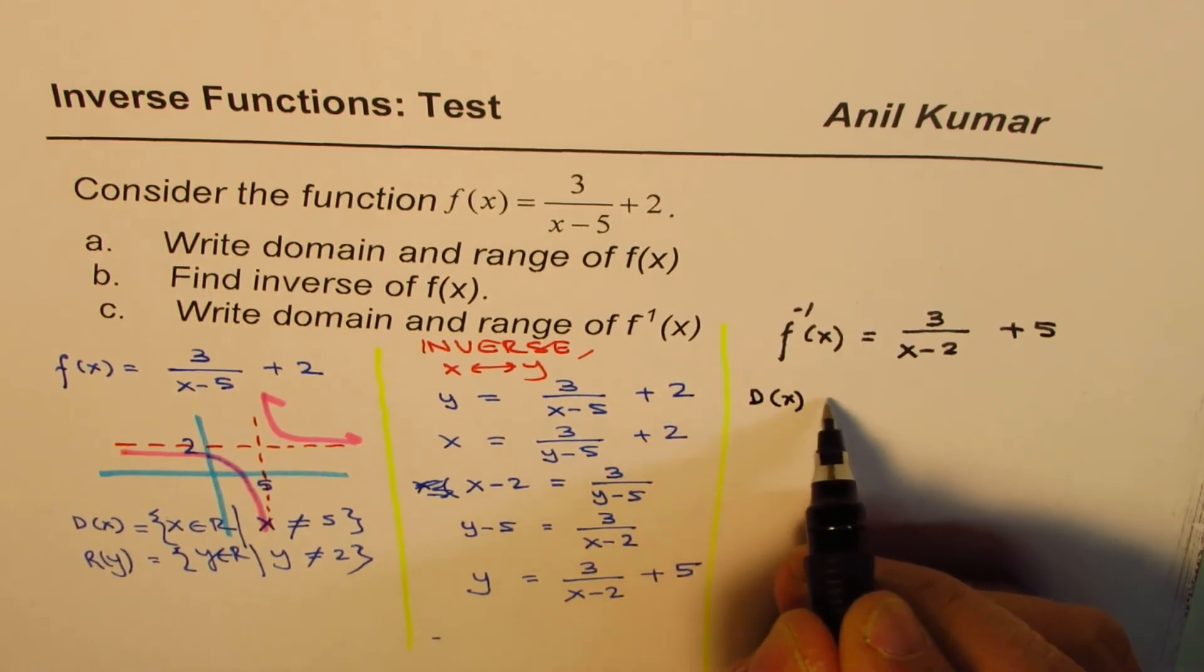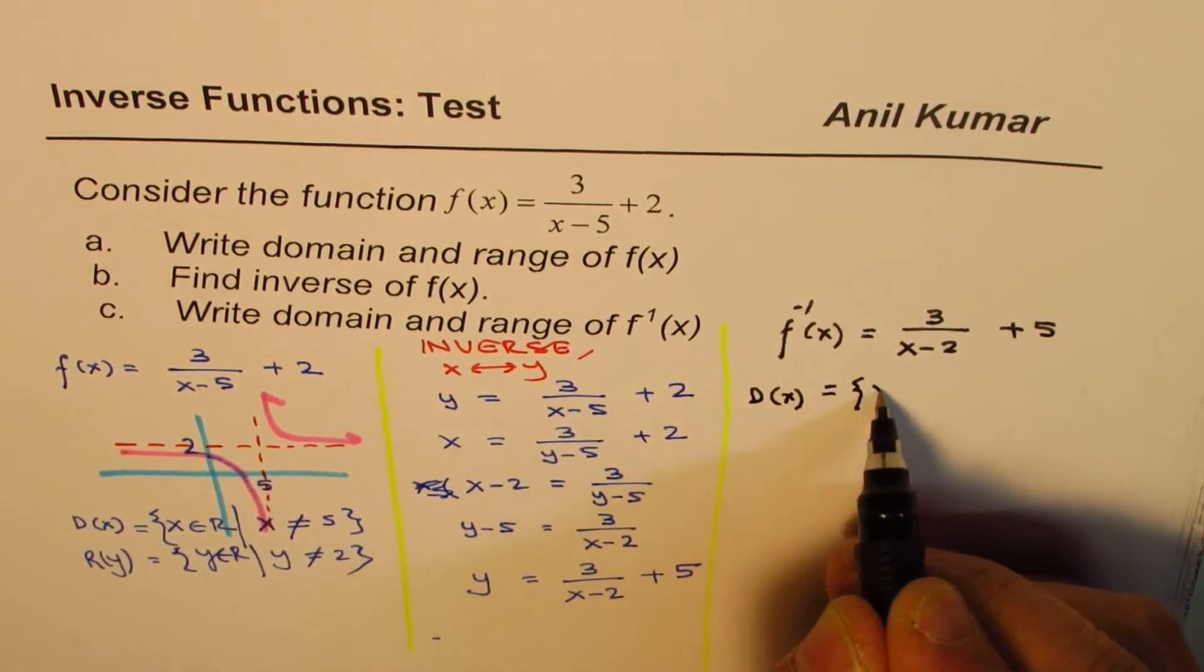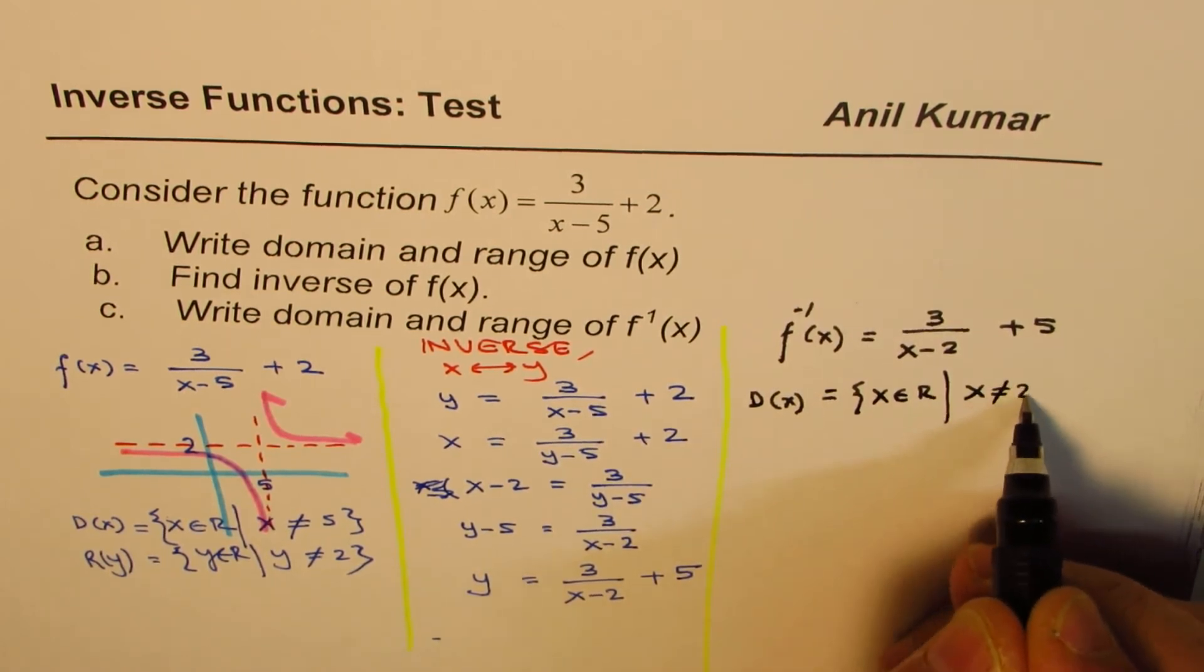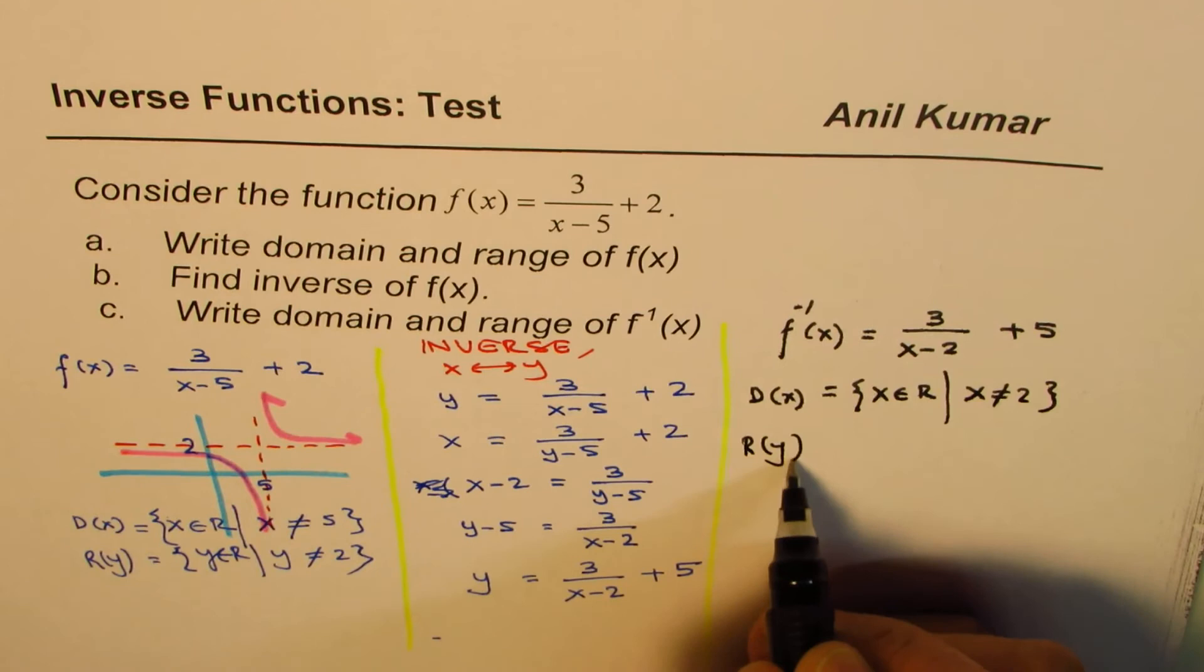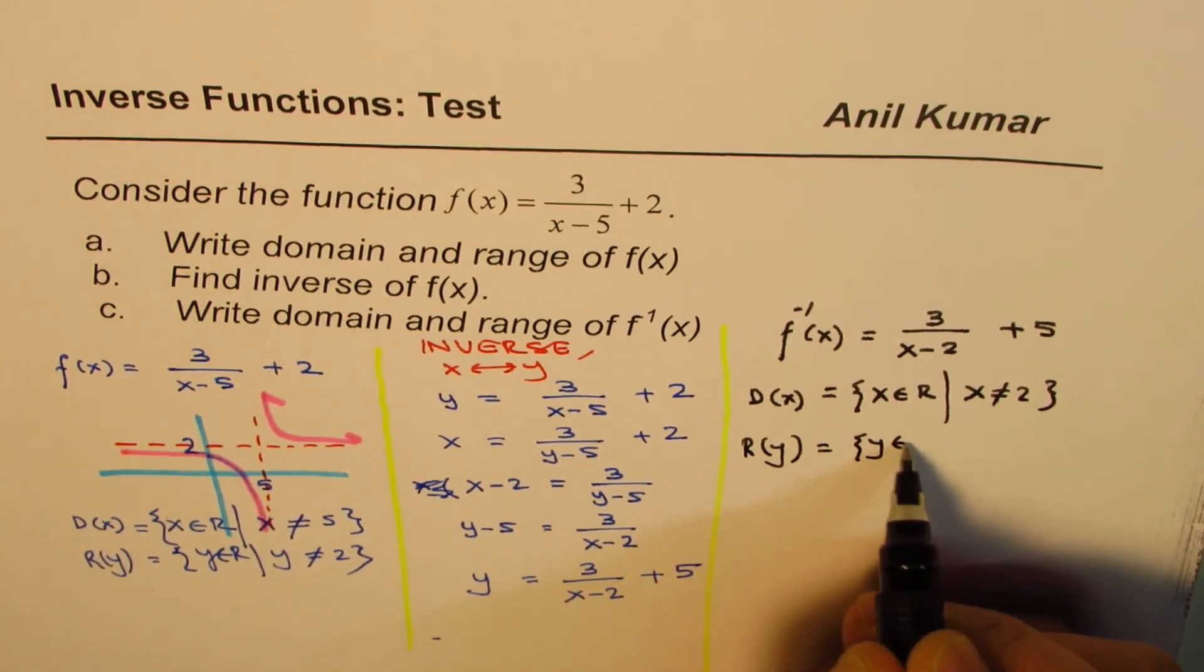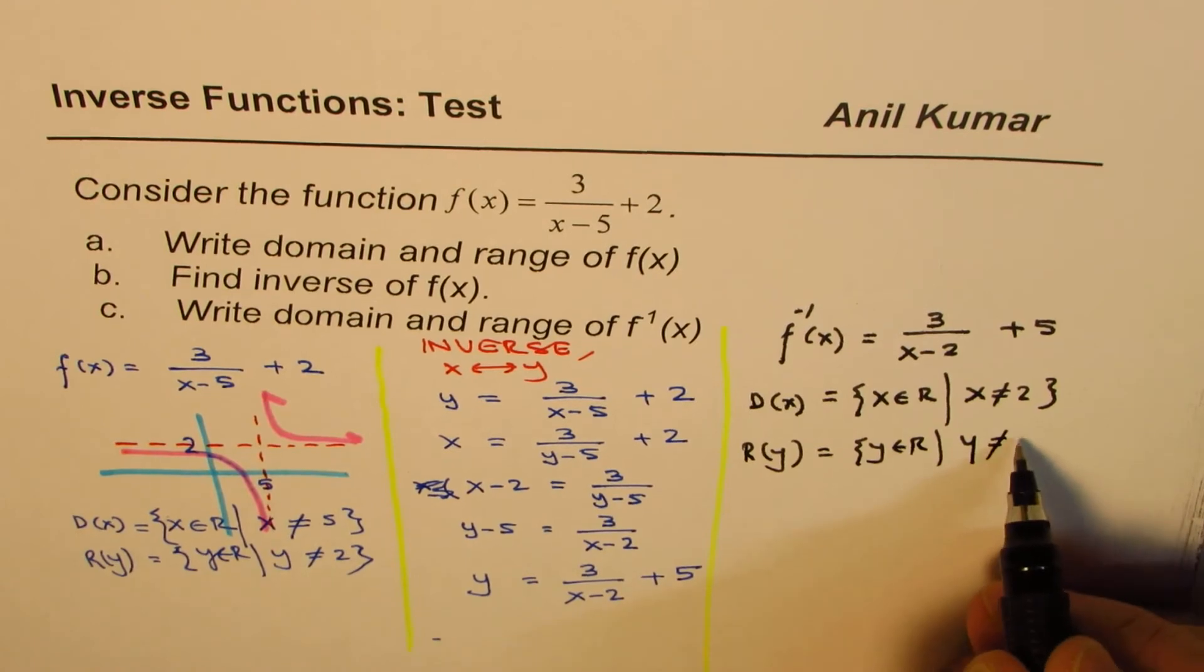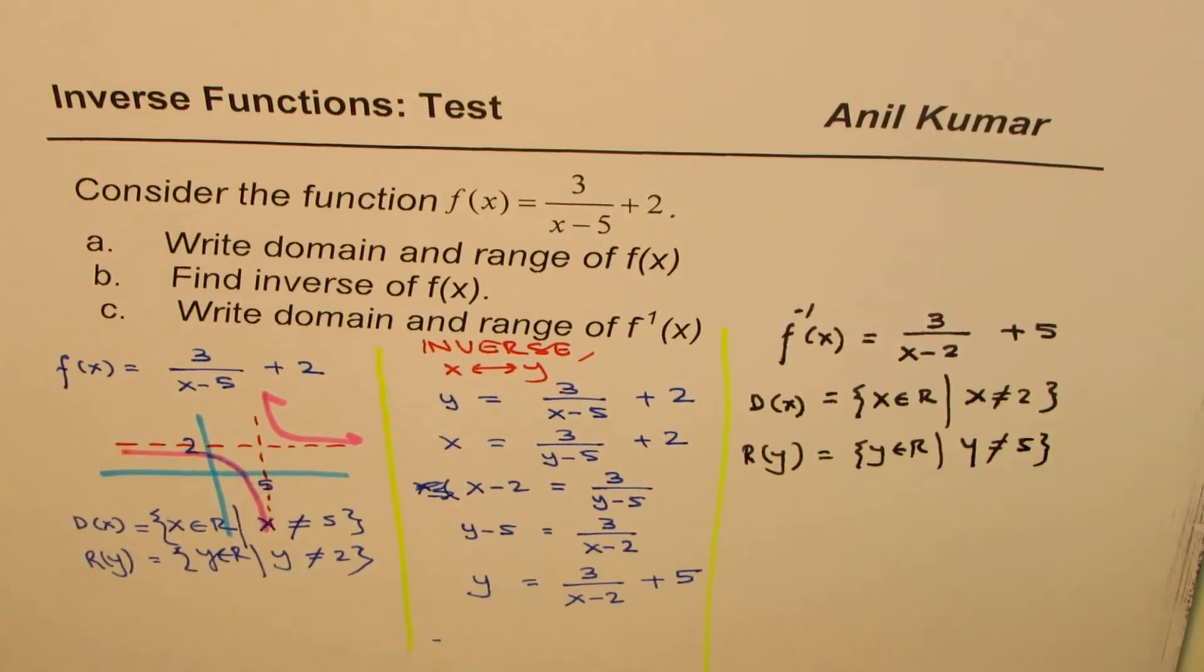So the domain of this function is, that x belongs to real numbers, and x is not equal to 2. As far as the range is concerned, range is y belongs to real numbers, and y is not equal to 5.